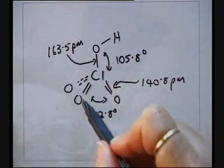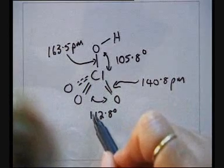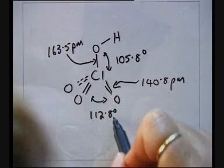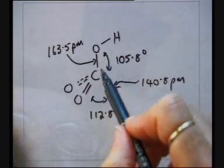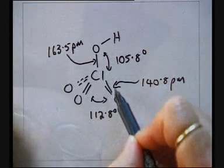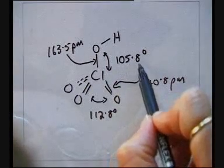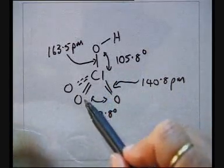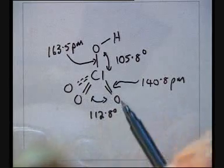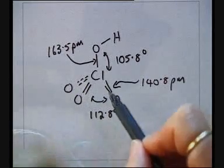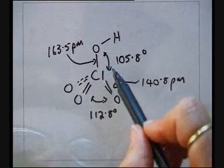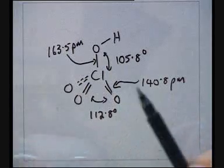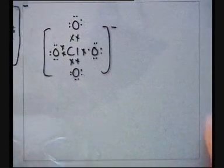We also see that the bond angles are measured as O–Cl–O: one bond angle is measured as 112.8 degrees, and one O–Cl–O bond angle is measured as 105.8 degrees — much smaller. When you have double bonds, they repel each other and bond angles increase. The bond angle between a double bond and a single bond will decrease in the presence of a double bond that needs more space. We therefore want to change our prediction.